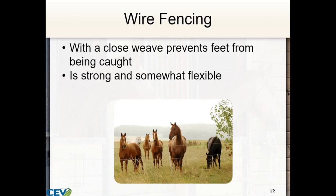Wire fencing is very common. When referring to wire fencing here, what's meant is a woven wire fencing — something like a two-inch by four-inch rectangular weave, which we call no-climb. It's preferred and is strong and somewhat flexible. The big advantage to close-woven wire is it prevents feet from getting caught. If you use something like a four-by-four hog wire, they'll get their feet caught and injure themselves and damage the fence.